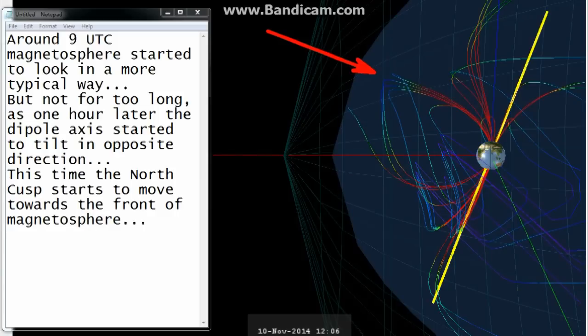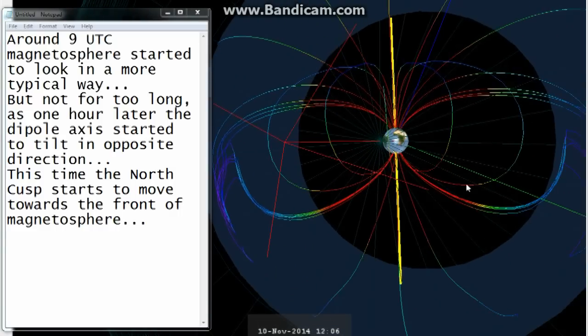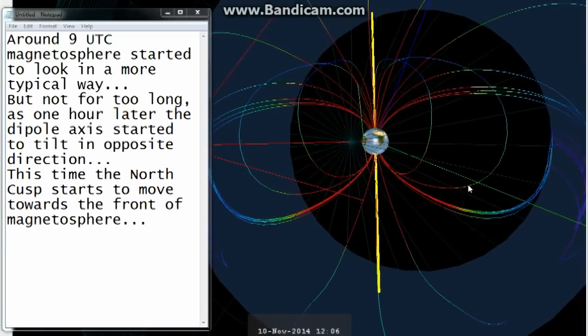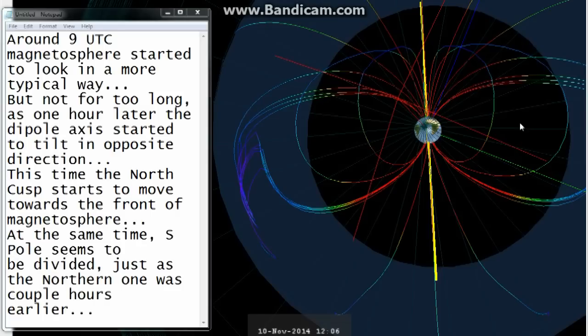This time the north cusp starts to move towards the front of the magnetosphere. At the same time, the southern pole seems to be divided just as the northern one was a couple hours earlier.